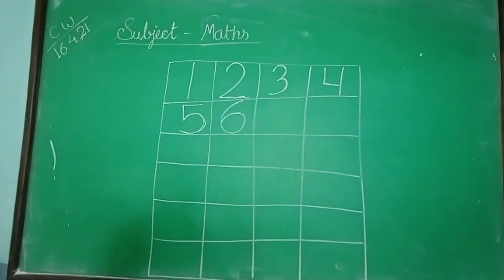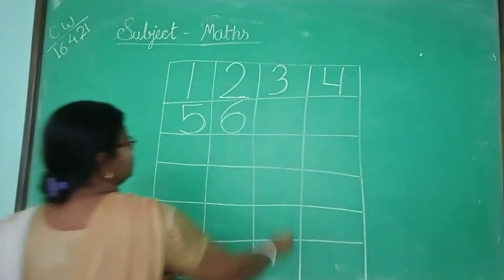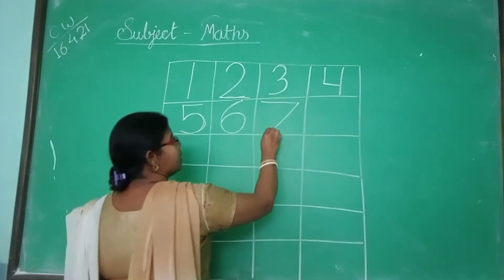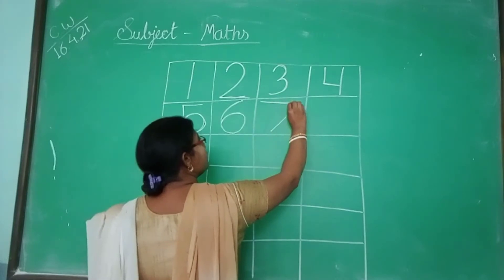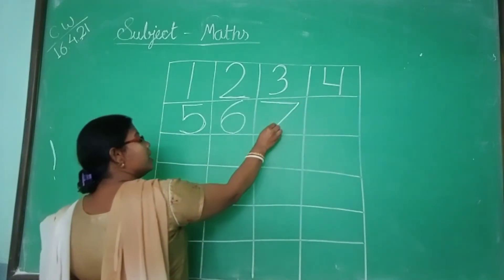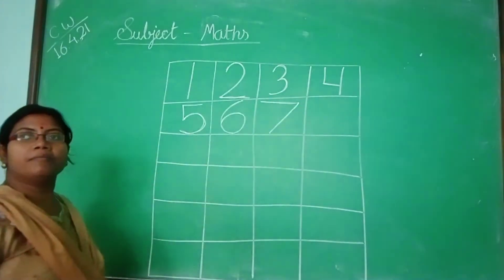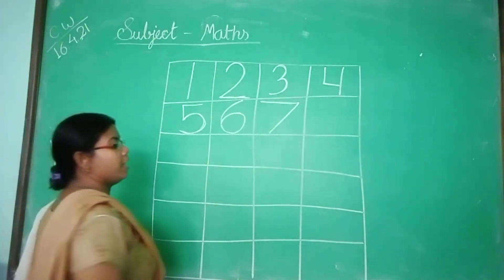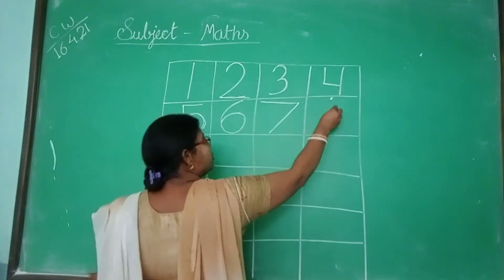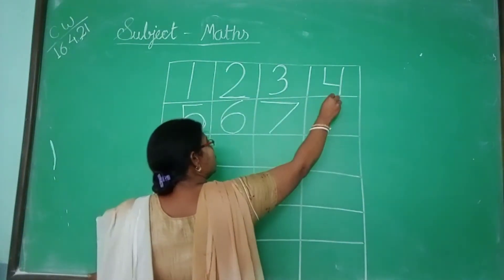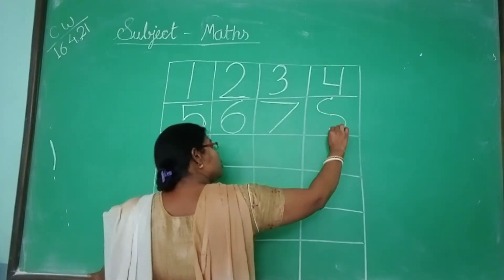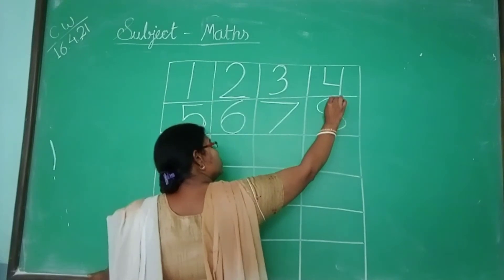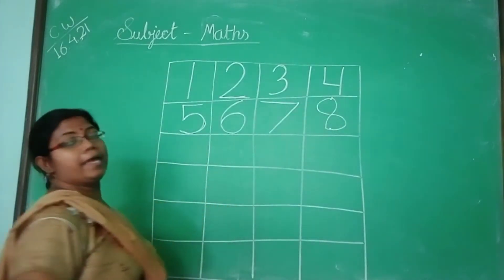Number 7. Slipping line, forward standing line — very easy. Slipping line, forward standing line, so we get number 7. And 8 — make a dot here, and it becomes number 8.